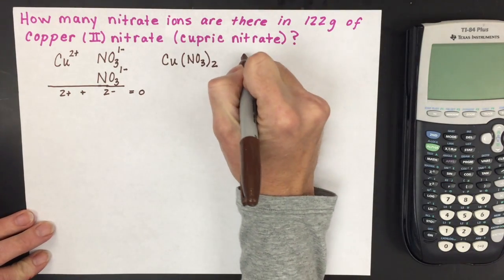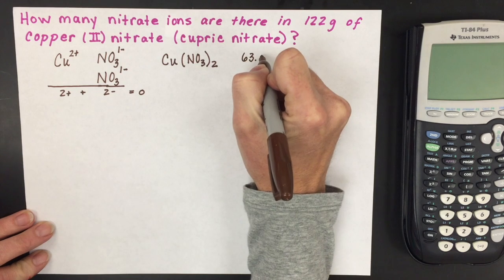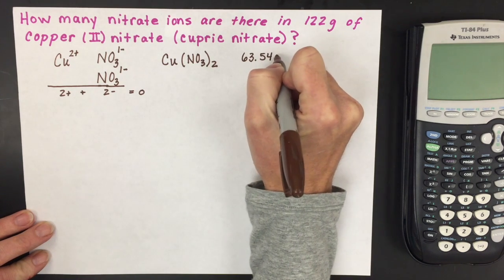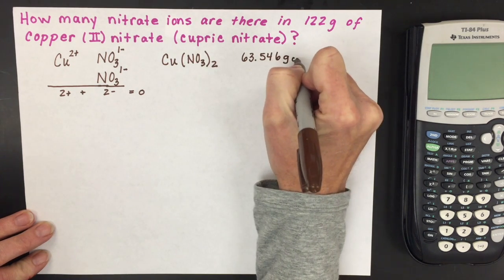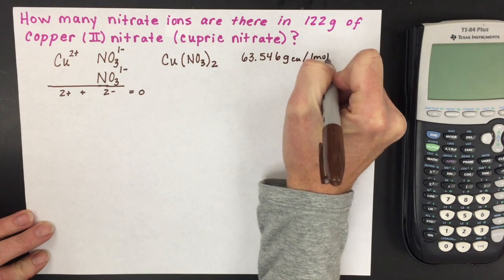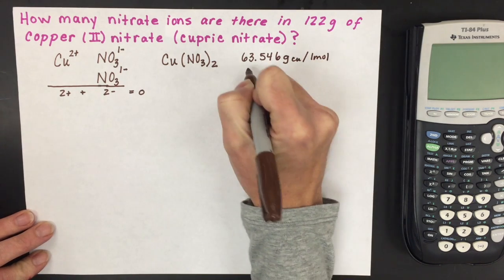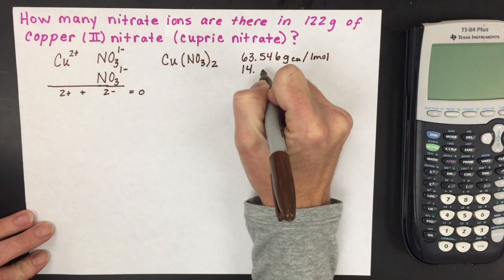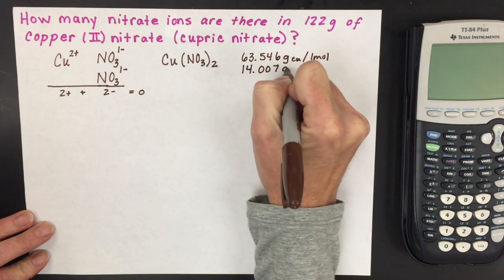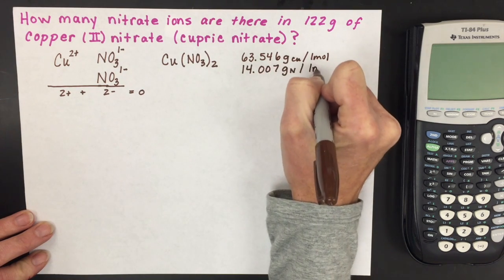Copper is 63.546 grams per mole. Nitrogen is 14.007 grams per mole.